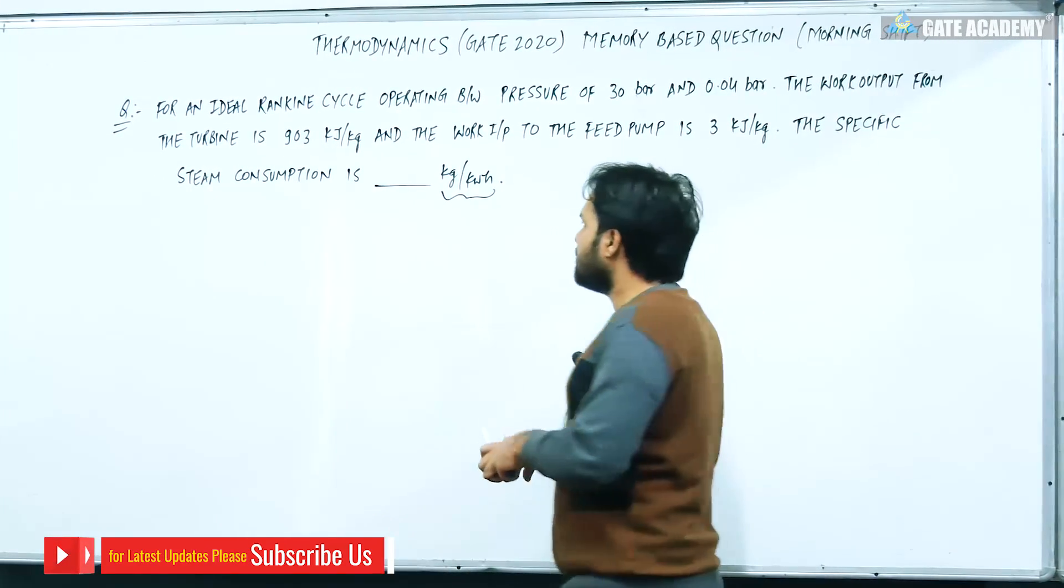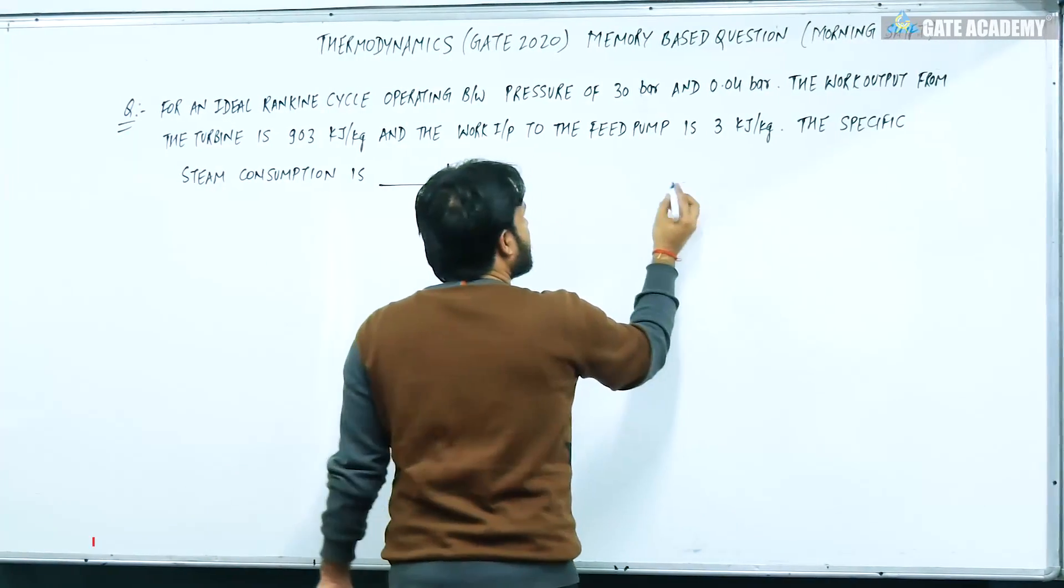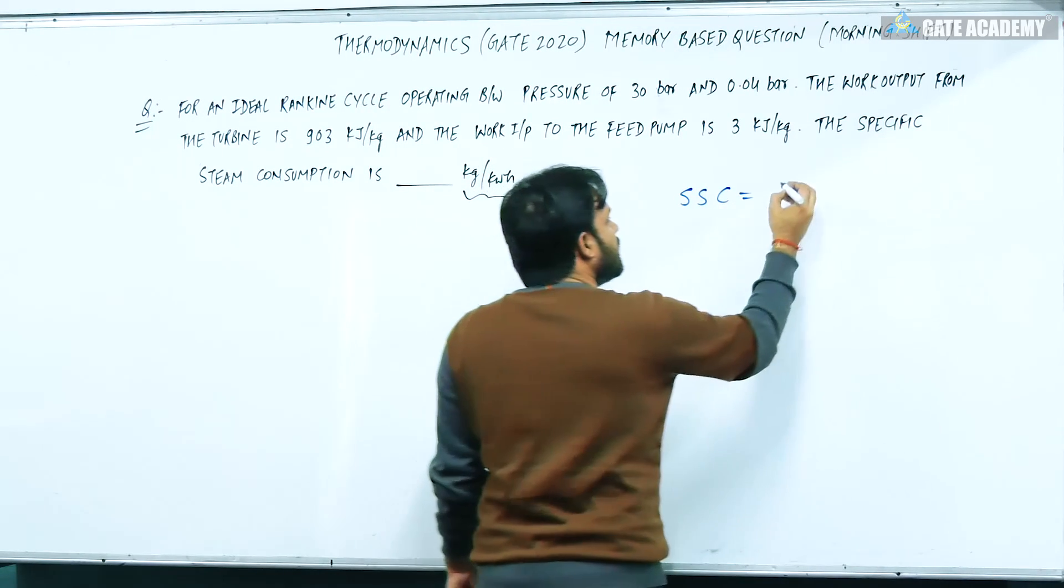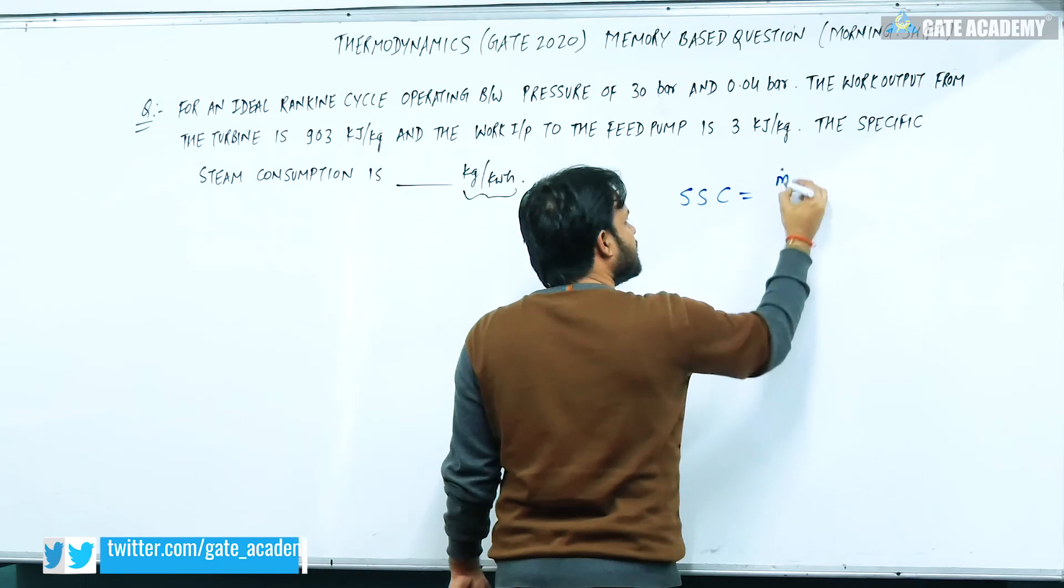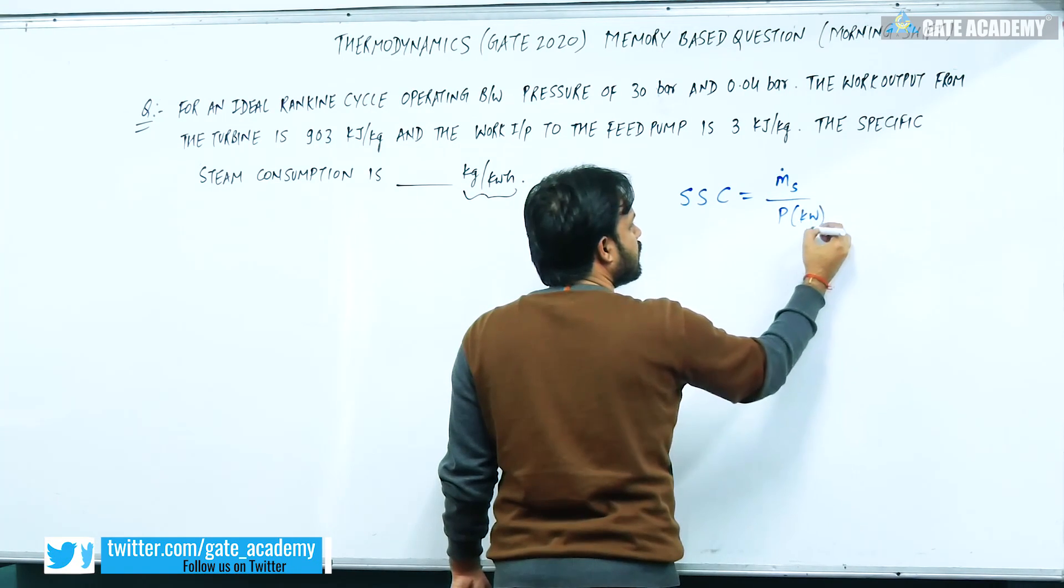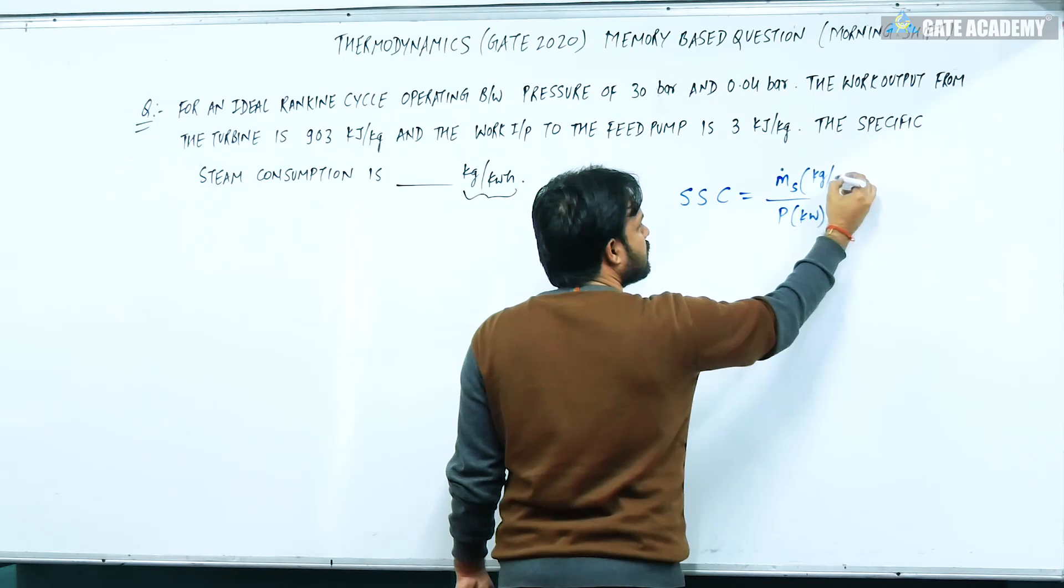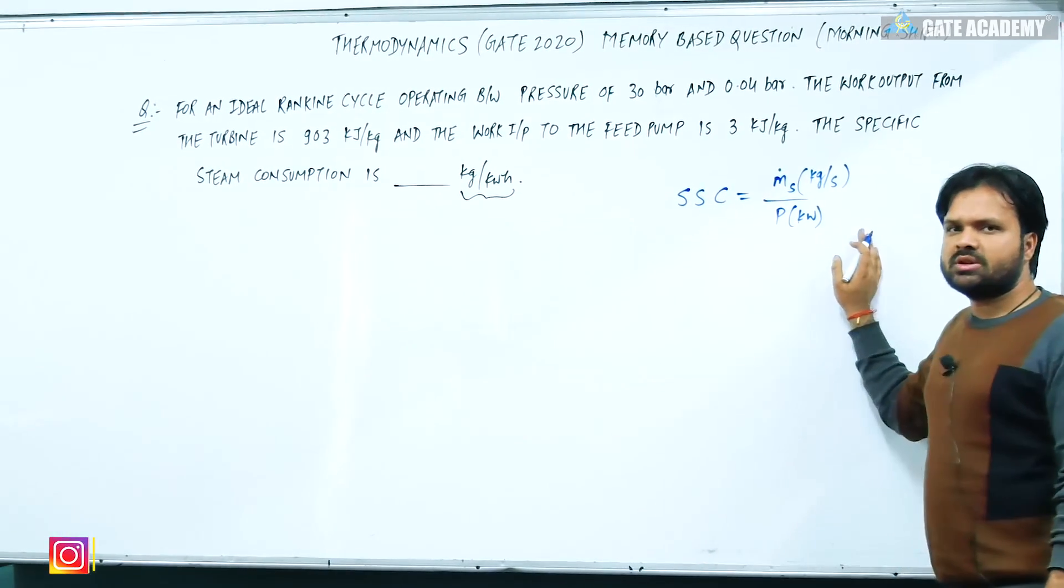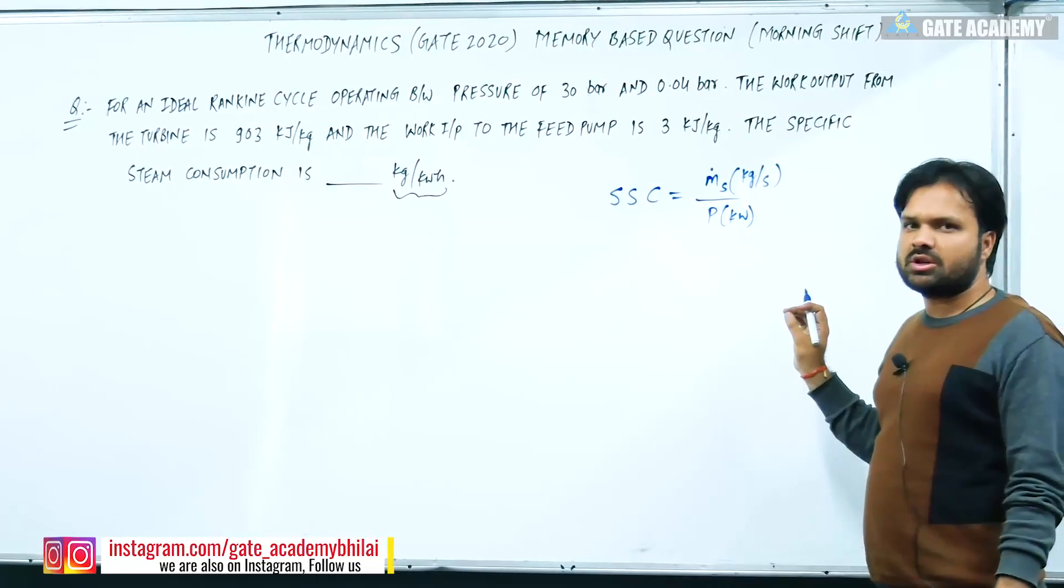So what is steam consumption rate? If I talk about specific steam consumption, it is the mass flow rate of steam required to produce unit power output. This is kg per second, and here I talk about unit power output, so I have to divide it. This is specific steam consumption.